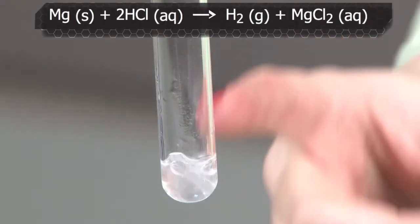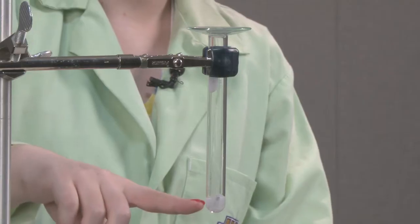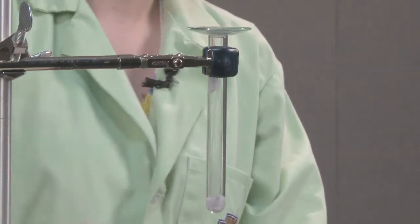As you can see, the magnesium metal is reacting with the hydrochloric acid to produce hydrogen gas and aqueous magnesium chloride. The bubbles that we see are evidence that the hydrogen gas is being produced.